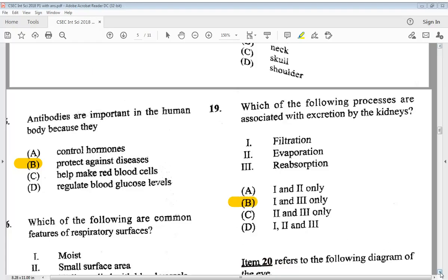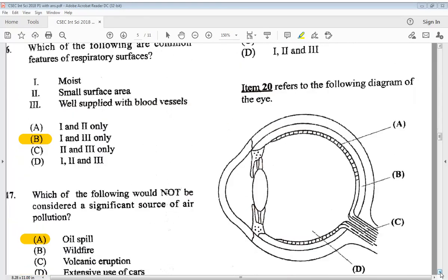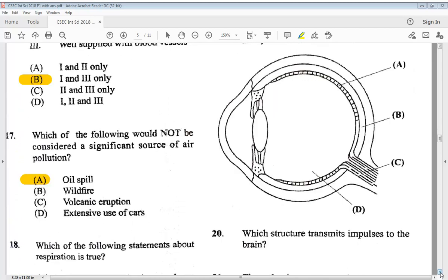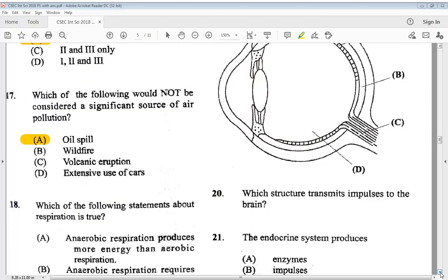Let's go to number 20. Item 20 refers to the following diagram of the eye. So 20 says, which structure transmit impulses to the brain? Is it A, B, C or D? So we know it is at C.